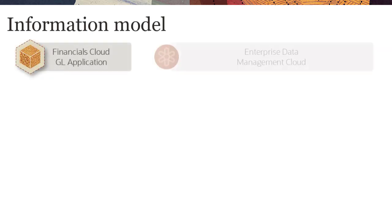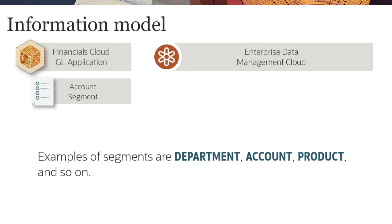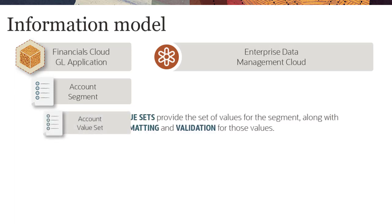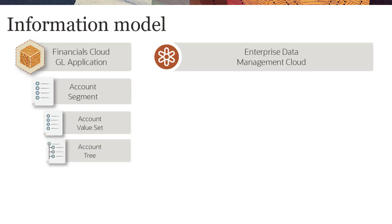Let's begin with a review of the information model for an Oracle Financials Cloud General Ledger application, and how it's mapped to the information model in Enterprise Data Management Cloud. In Financials Cloud General Ledger, the chart of accounts consists of segments. Examples of segments are department, account, product, and so on. We'll use an account segment in our example. Each segment has a value set that provides the set of values for that segment, along with the formatting and validation for those values. Value sets are organized in hierarchies using trees that can have one or more versions.